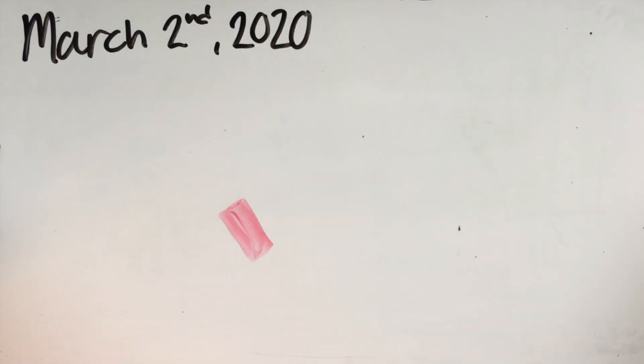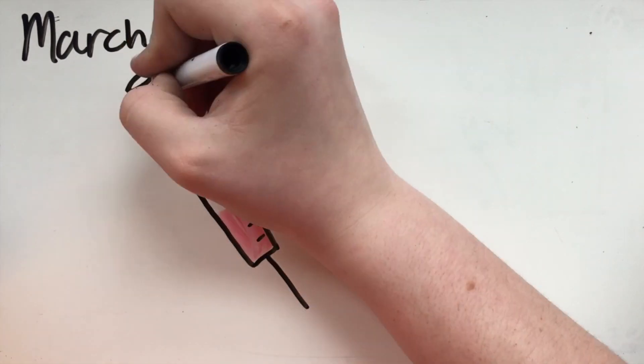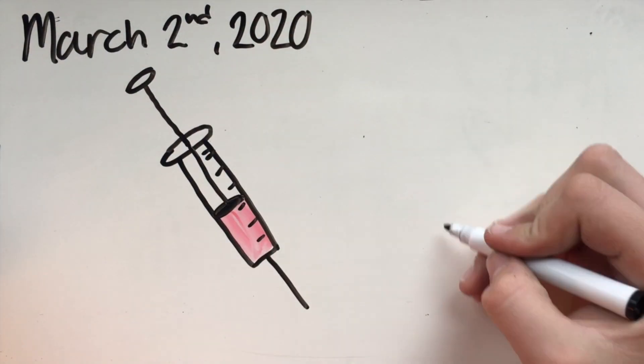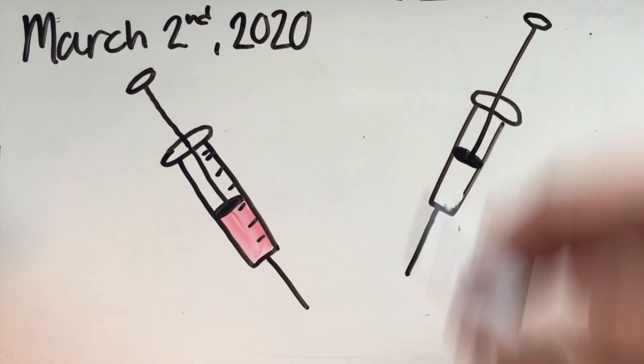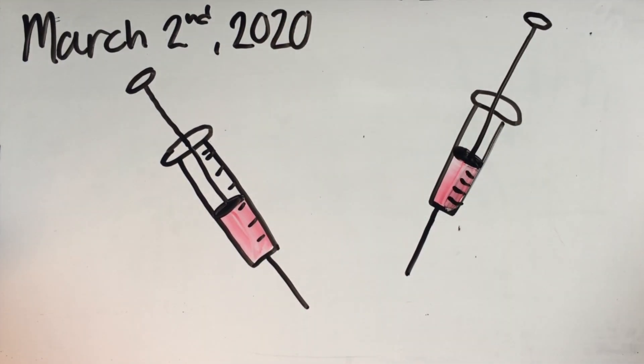On March 2nd, 2020, President Trump claimed that a vaccine will be readily available, and four days later claimed that anybody who wants to get a test can get a test, despite it still being very difficult for most of the population to get a test.